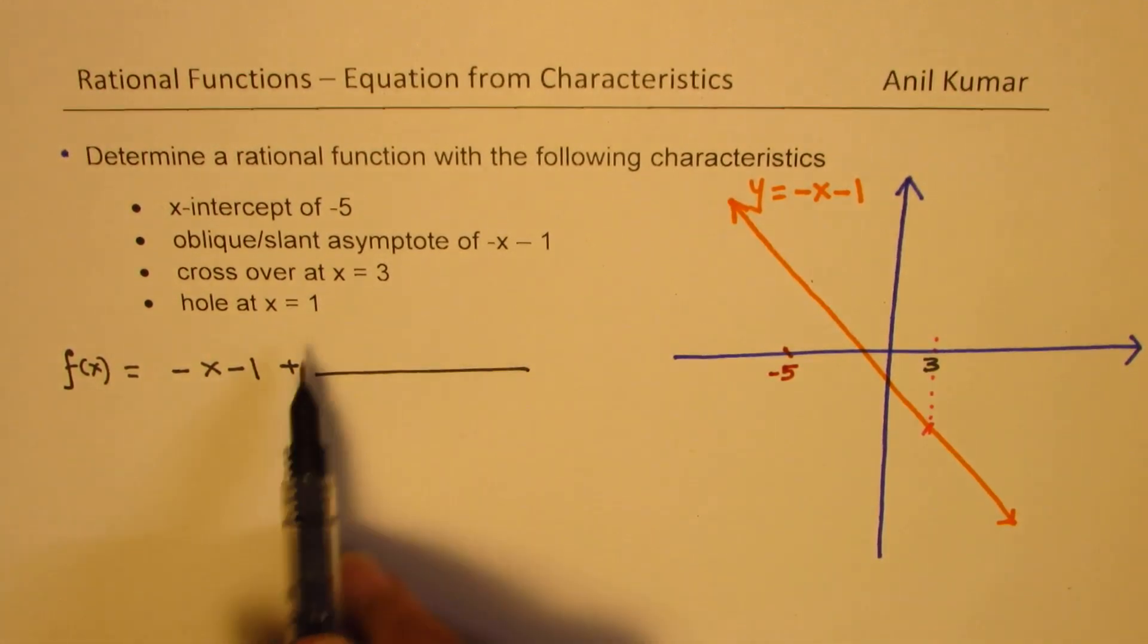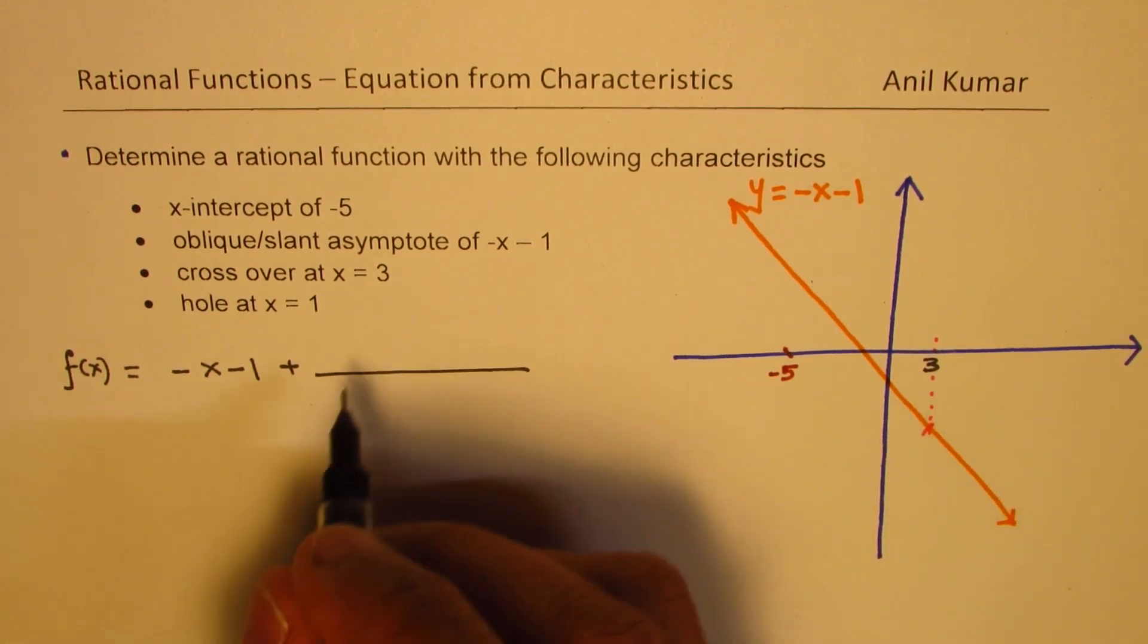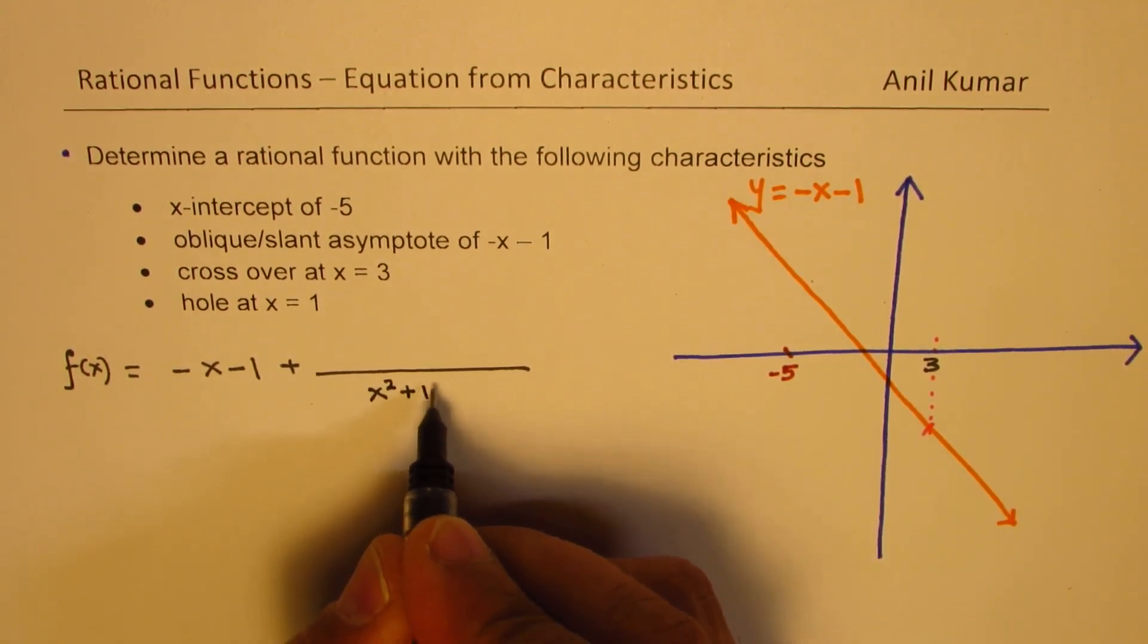So when you divide the whole thing, you get that as your quotient. So we are approaching, and that is what it shows. Now, since it is a rational function, and we have no vertical asymptotes in this case,